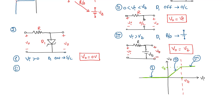In the second case, VI is less than 0 and greater than minus Vz. This means the zener diode is reverse biased but not yet in the breakdown region. In this case D1 is off and can be treated as an open circuit, so the output voltage is equal to the input voltage.